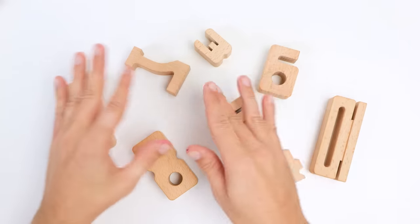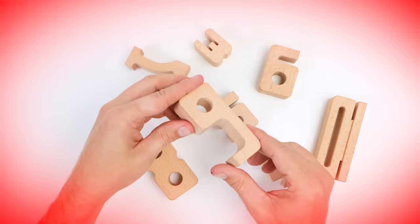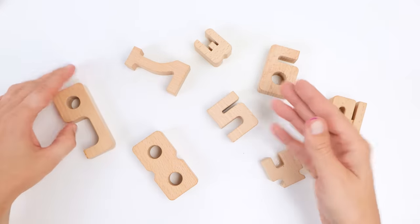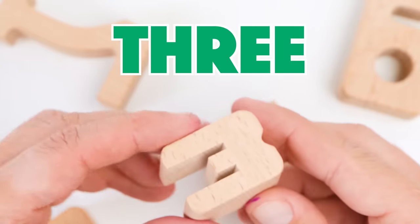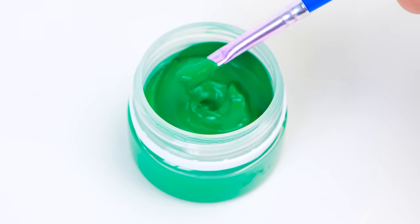Now we need the number three. No, that's a five. And this is a nine. That's not right. Do you see it, friends? Yes! Here's the number three. We found it. Green is perfect. It reminds me of leaves and grass.